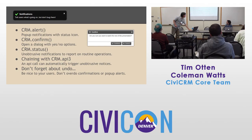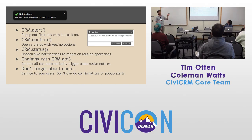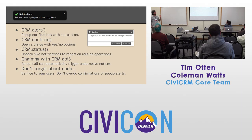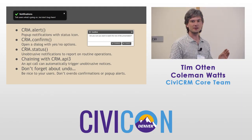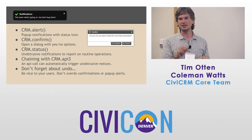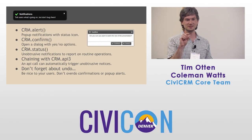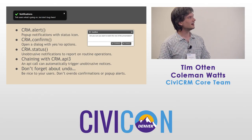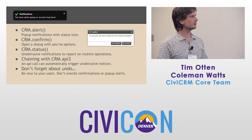CRMConfirm displays a dialog that presents a choice to the user. And then there's CRM Status — a little yellow, green, or red notice at the top of the screen to let you know that something is okay, in progress, or not okay, without having to get in your face and block your view of the screen.